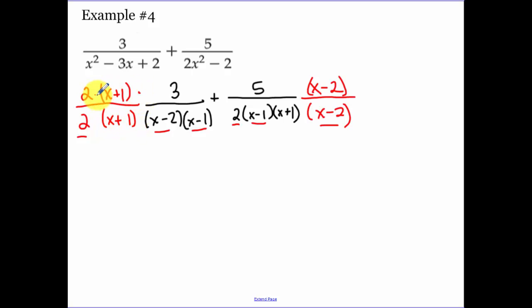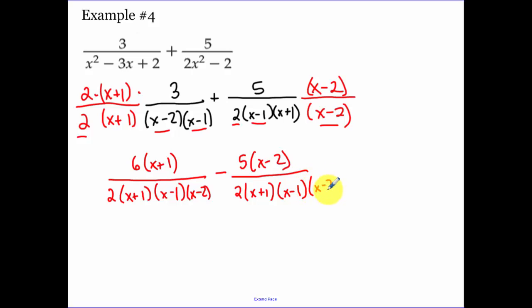Now remember, each one of these things that I'm multiplying in are being multiplied. So I have 6 times x plus 1 as my numerator, and then I have my craziness. Leave everything unfactored. I'm just going through as I'm rewriting this, just making sure that both denominators are the same, just checking over my work.